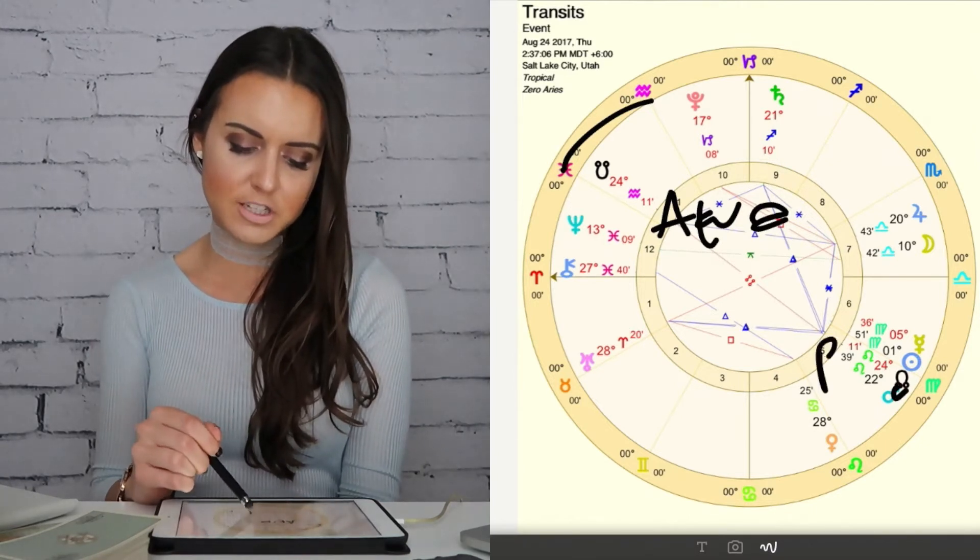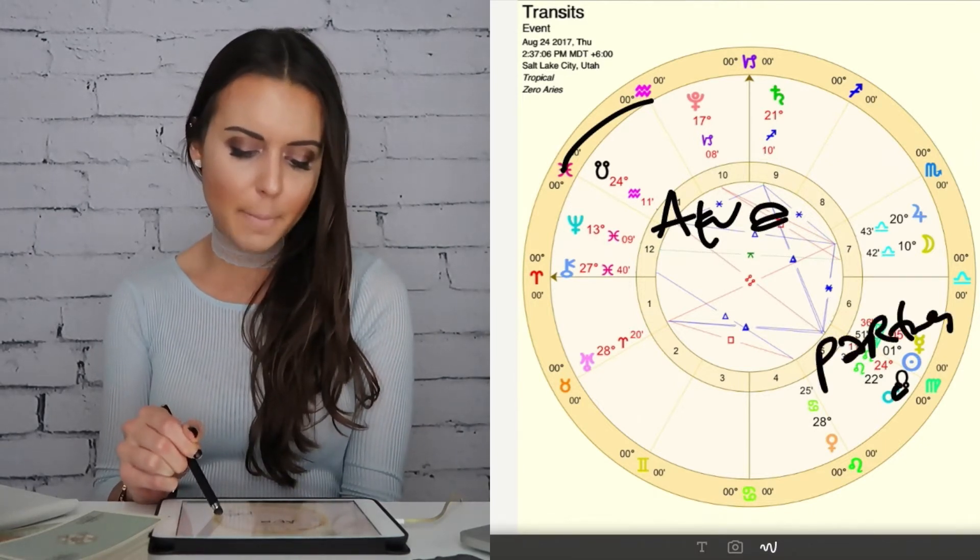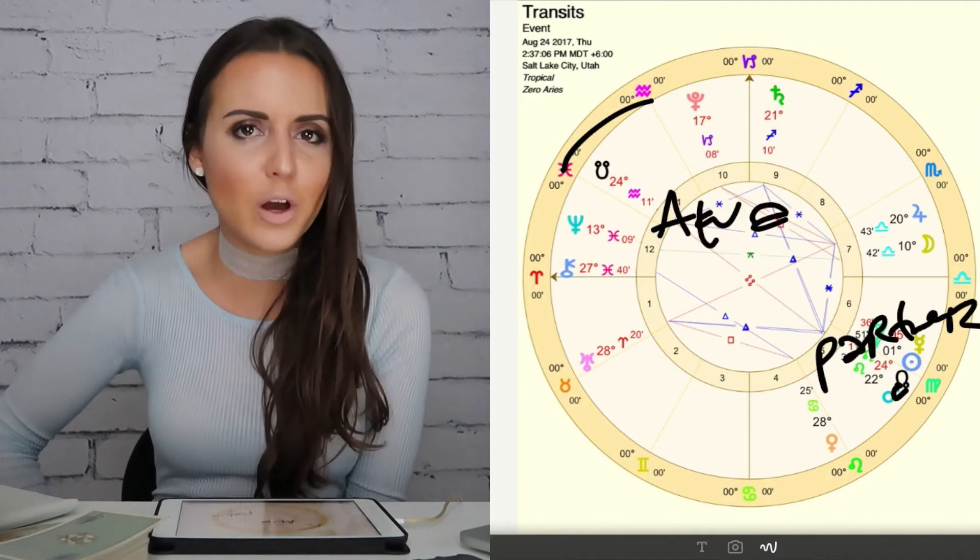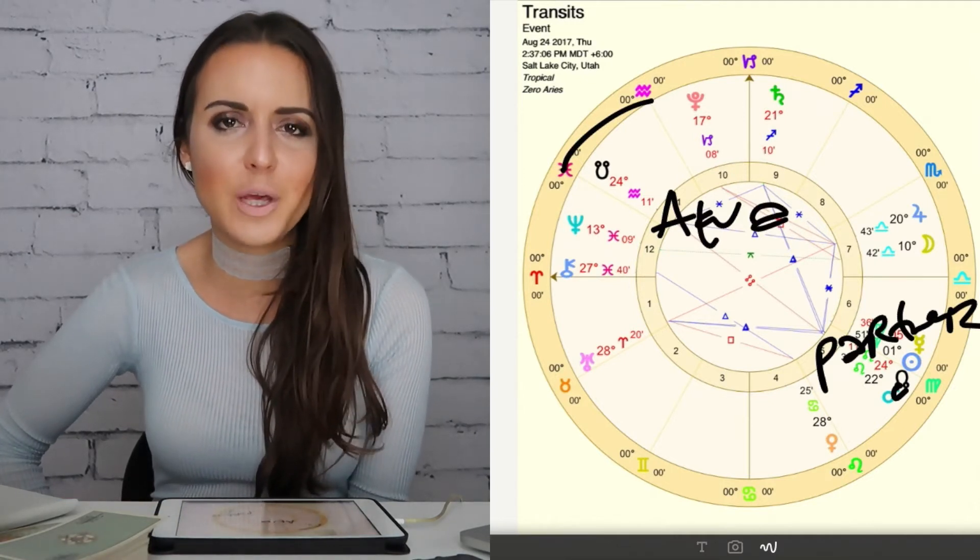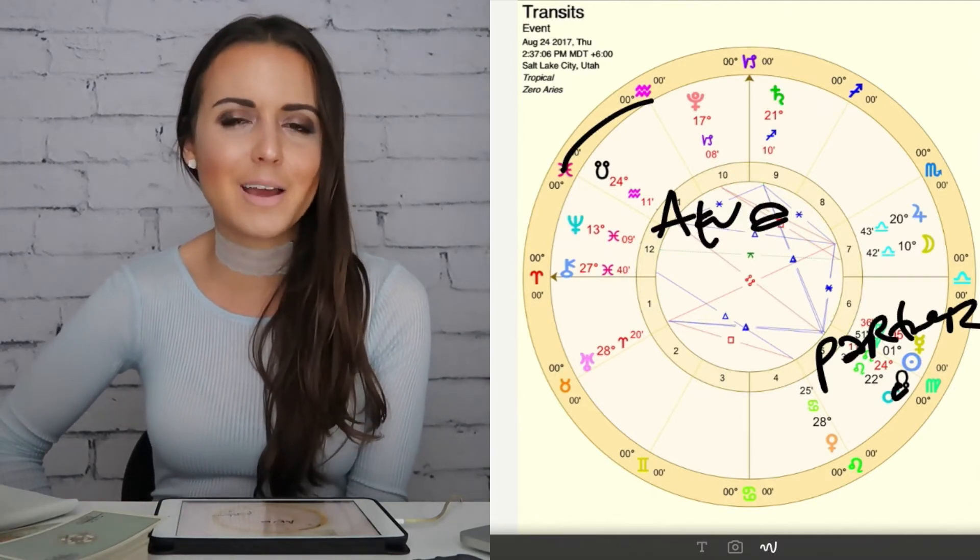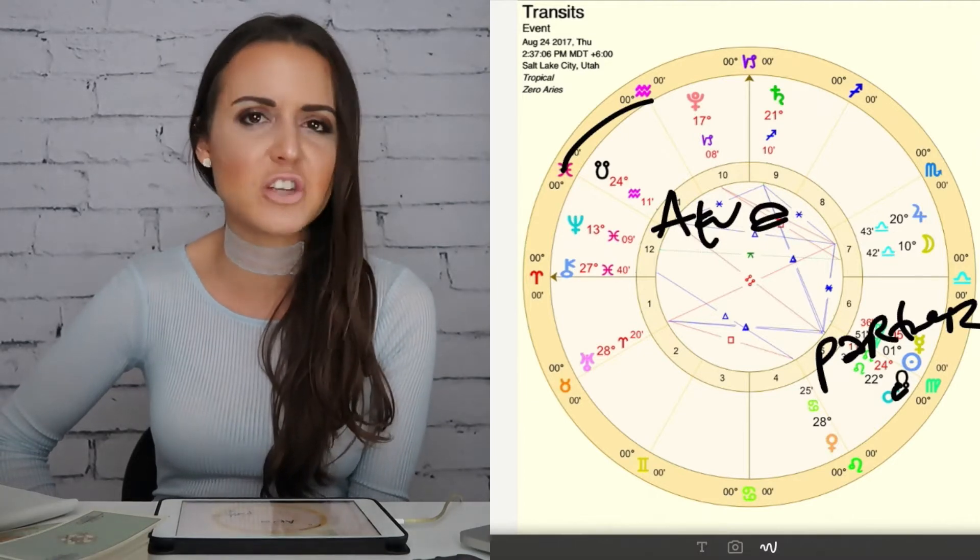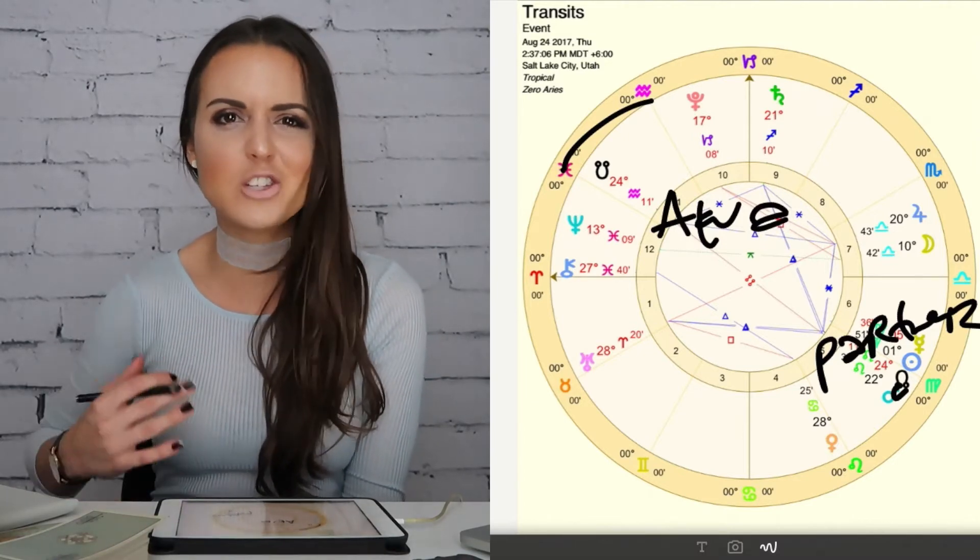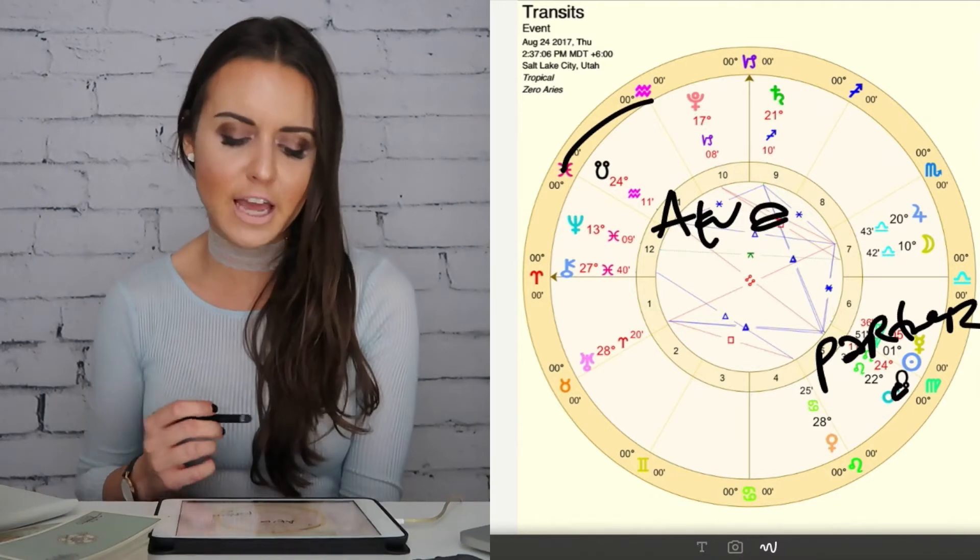What we've got going on here is a new moon solar eclipse in your seventh house of partnerships, commitments, and one-on-one relationships. This doesn't have to be romantic—it can be a business partnership or marriage, something you feel beholden to and committed to. It also rules contracts.